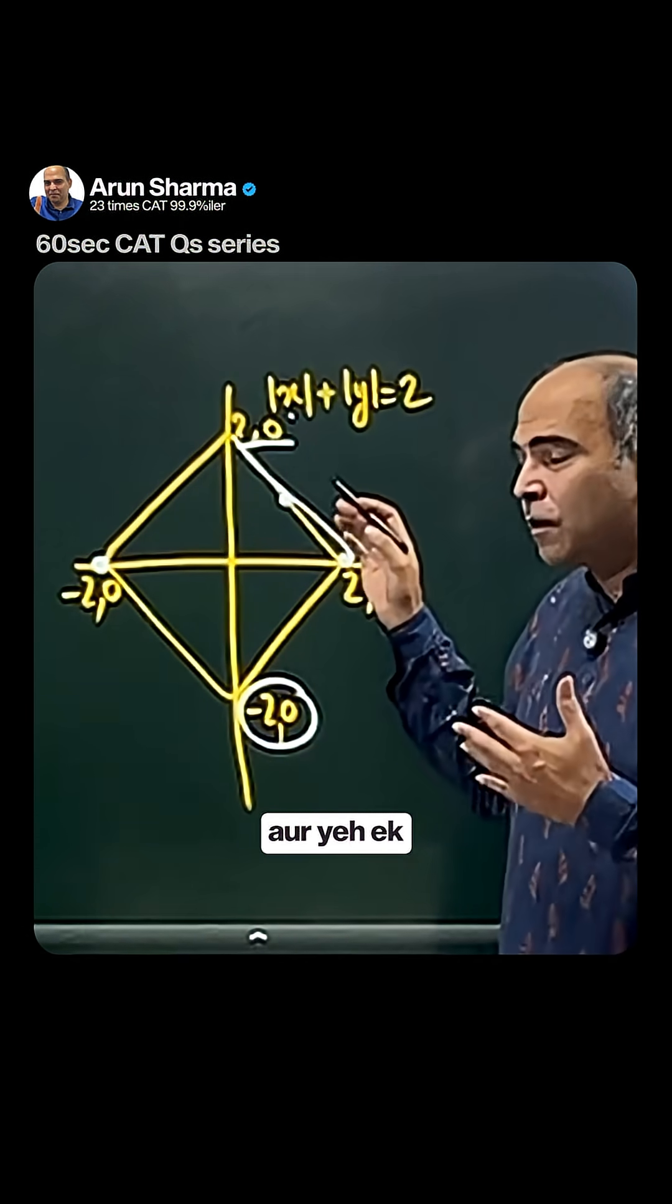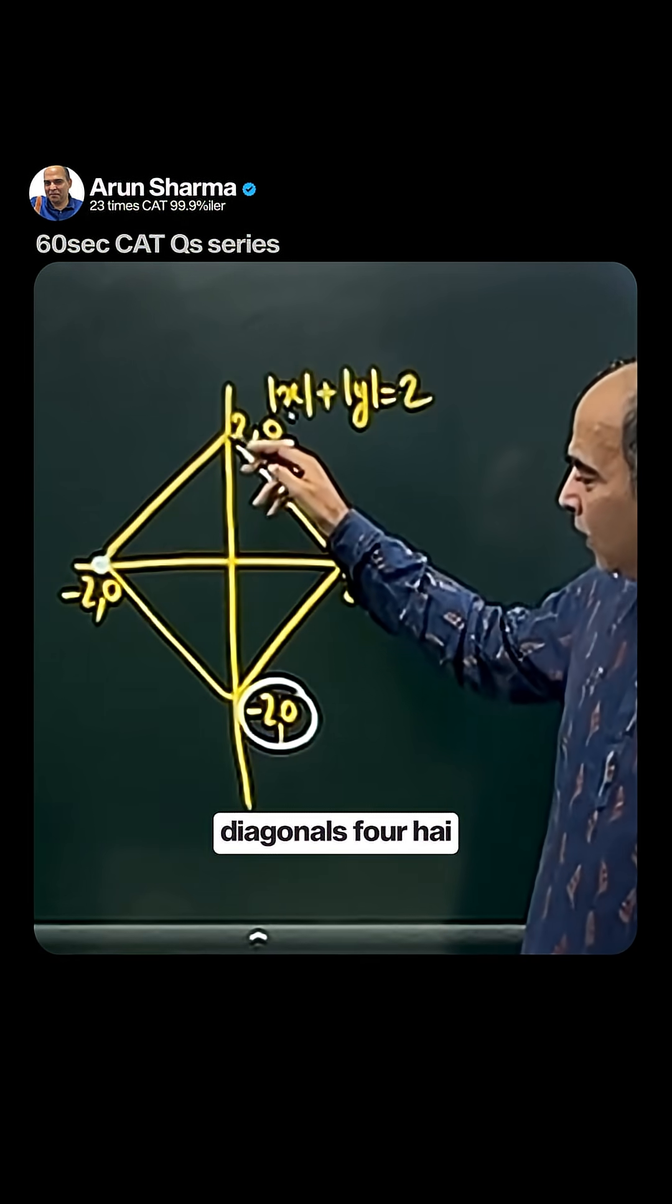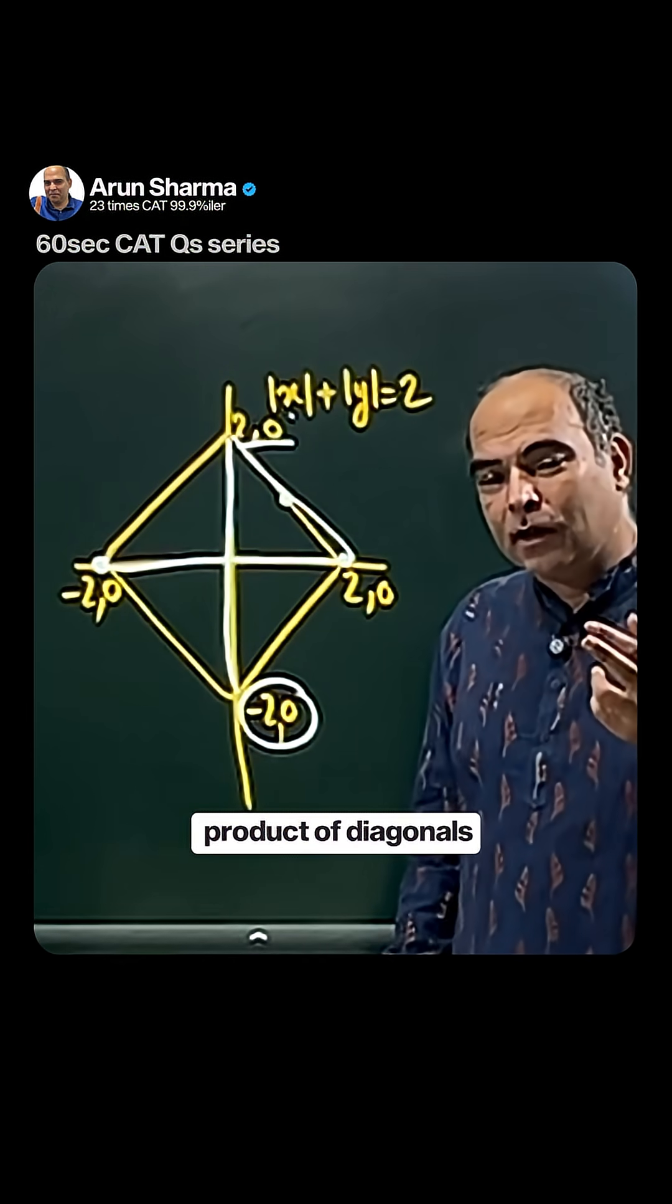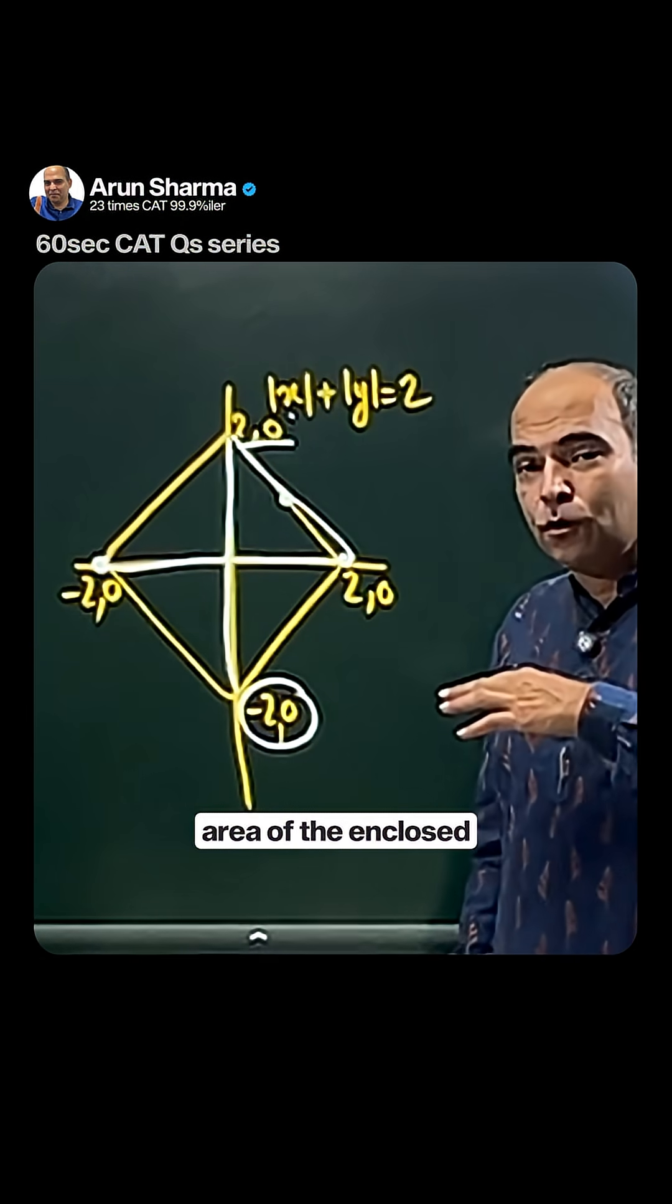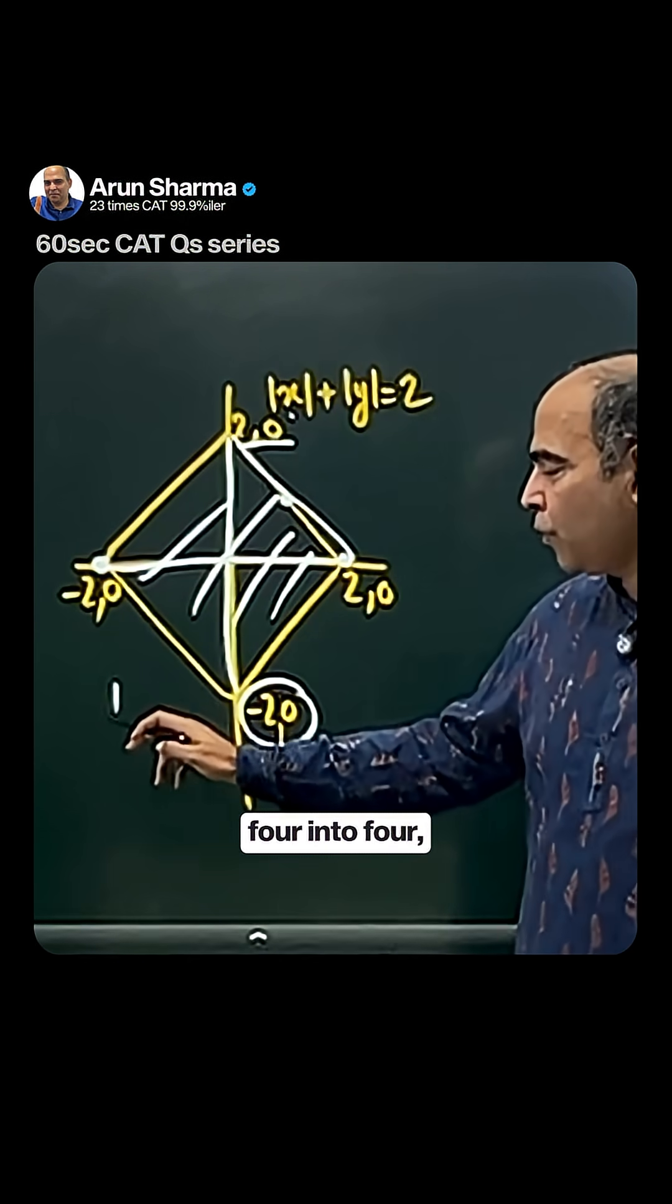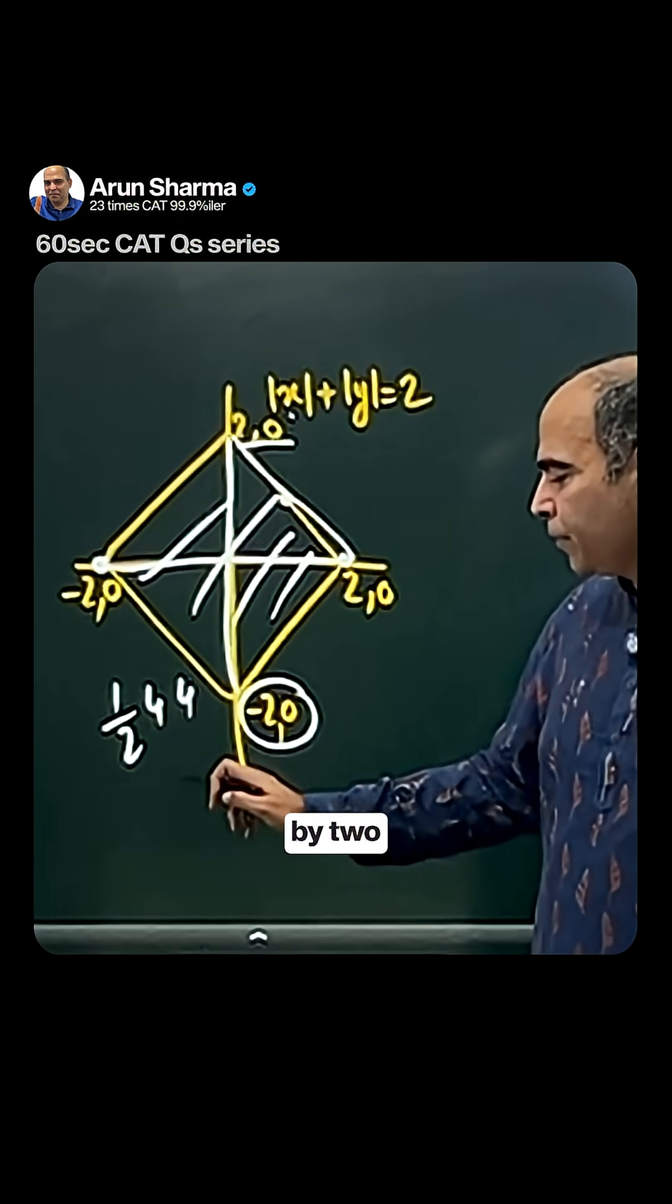This is 4 and this diagonal is 4. So using half into product of diagonals for the area of the enclosed surface, you'll get half into 4 into 4, which is 16 by 2, which is 8.